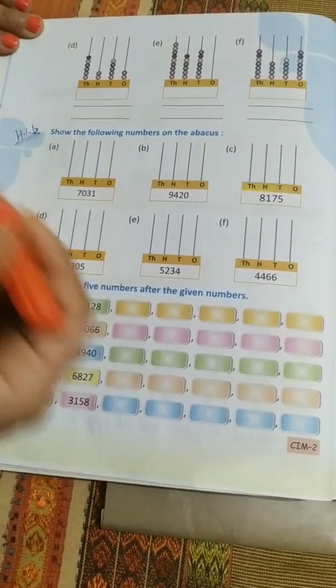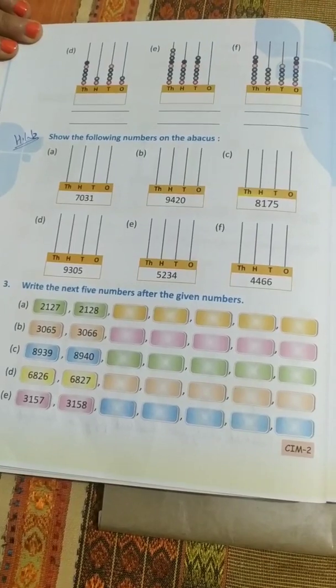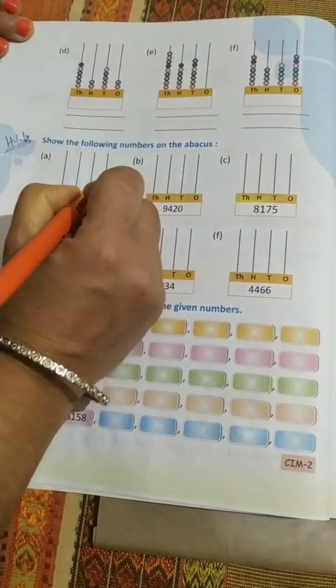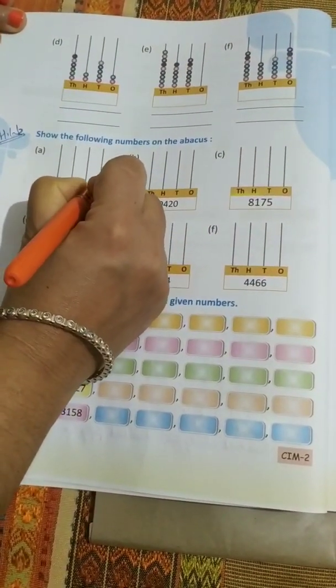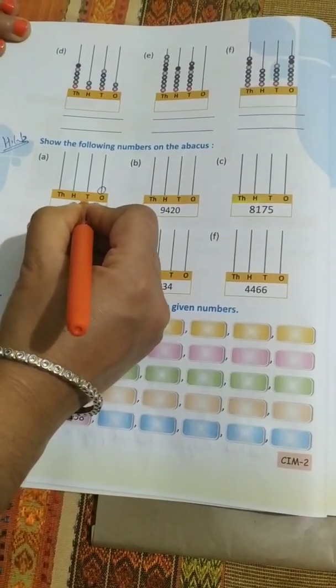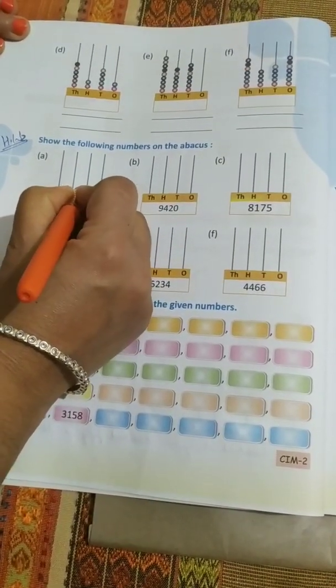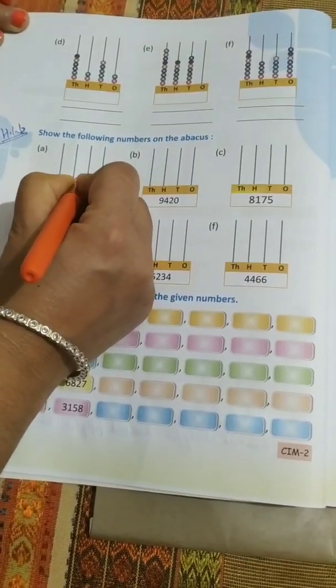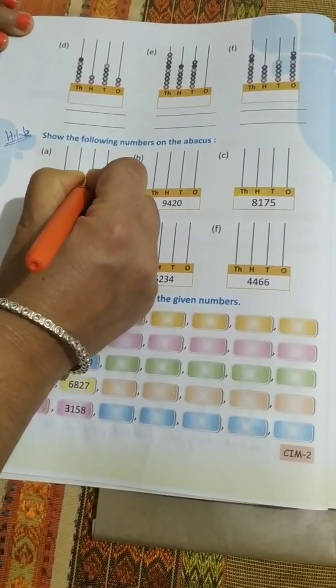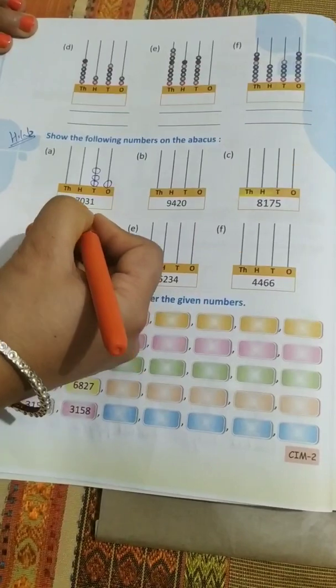1 is on one's place, means you will draw 1 bead on one's place. Then on the tens place we have 3, means 3 beads on the tens place. Hundred